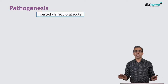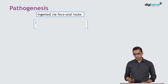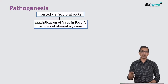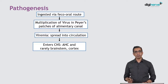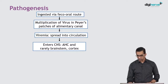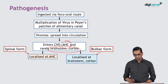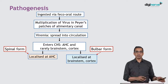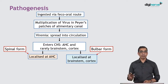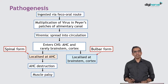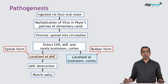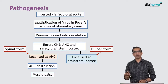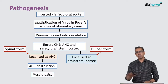What is the pathogenesis — how does polio actually affect a person? It is ingested via the feco-oral route, reaches the alimentary canal, multiplies in the Peyer's patches, and then there is a viremia into the bloodstream. It enters the central nervous system — either the anterior horn cell, which is most common, or sometimes the brain stem and the cortex. When it goes to the anterior horn cell, we call it the spinal form; when it goes to the brain stem and cortex, we call it the bulbar form. The anterior horn cells get destroyed and patients get muscle paralysis, and that is why in typical polio there is no sensory loss — it is always motor paralysis.